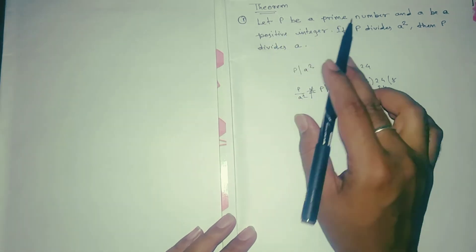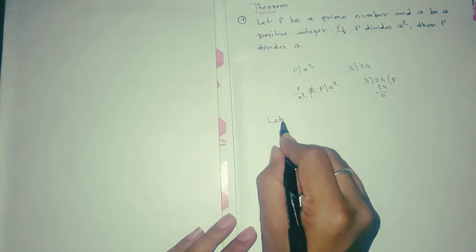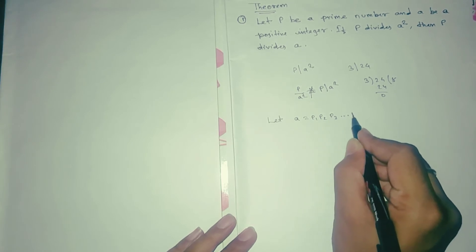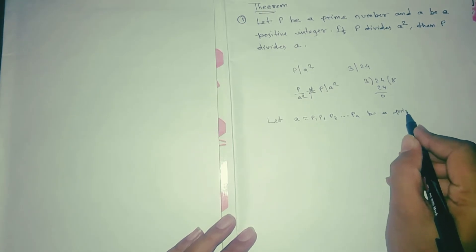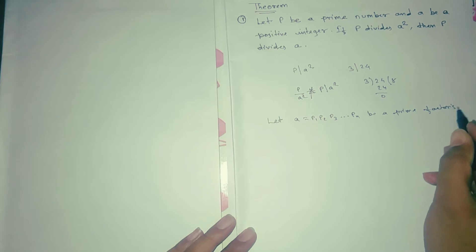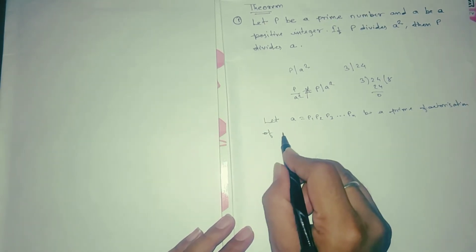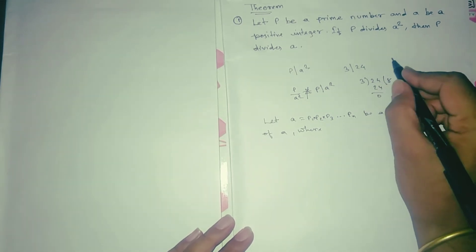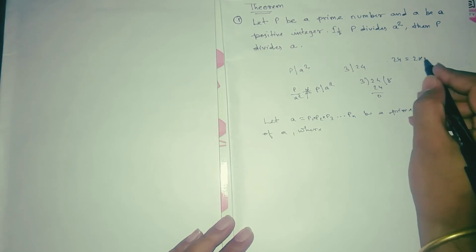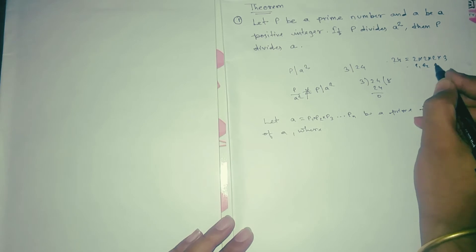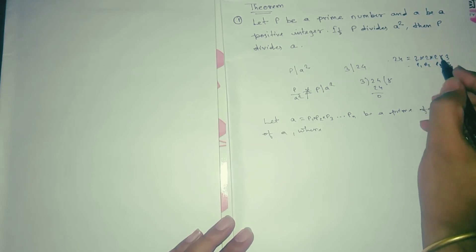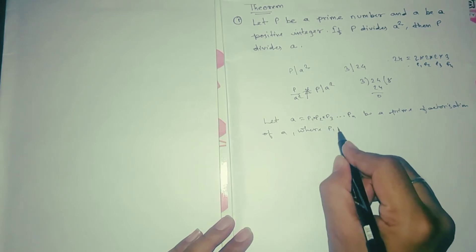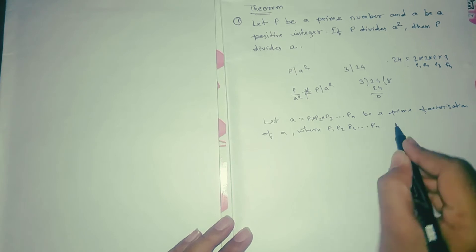Now, we take p as a prime number. Let a = p1 × p2 × p3 × ... × pn be the prime factorization of a. For example, the prime factorization of 24 is 2 × 2 × 2 × 3, so p1, p2, p3, p4 are 2, 2, 2, 3 — they are not necessarily distinct.